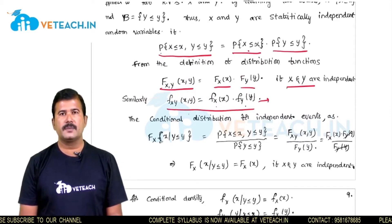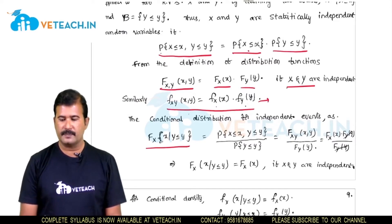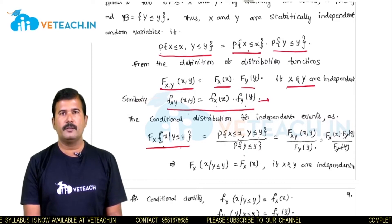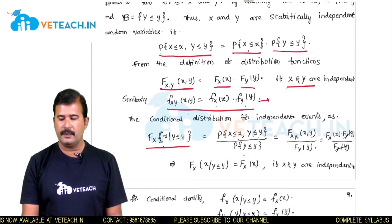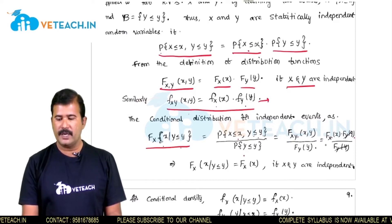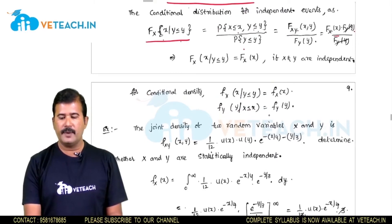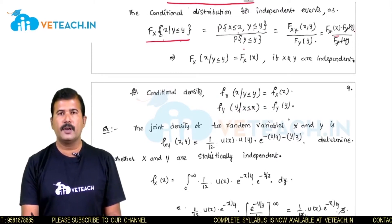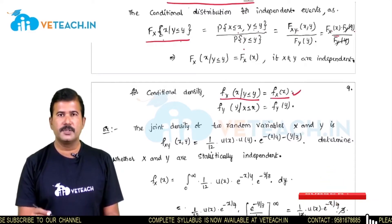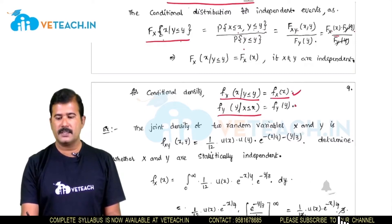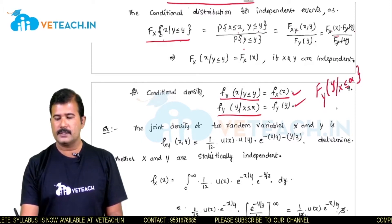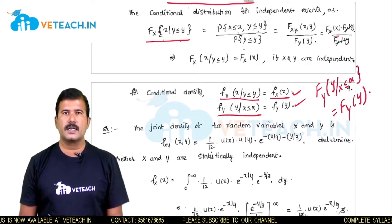Similarly, applying the same concept to conditional distribution or conditional density functions: f_x(x|y) equals joint probability P(x and y) divided by P(y ≤ y). If x and y are statistically independent, this becomes f_x(x|y) = f_x(x), and similarly f_y(y|x) = f_y(y). That means if x and y are independent, the conditional distribution in x given y equals the marginal density in x, and the same holds for y given x.